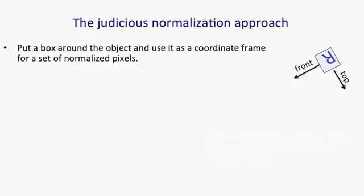A second approach is what I call judicious normalization. If you look at that upside-down capital letter R on the right, I've put a box around it, not very well in fact, and I've labelled a top and a front for that box. Relative to that box, the R has, for example, a vertical stroke at the back and a loop facing forwards at the top. If we describe features of the R relative to that box, they're going to be invariant, assuming it's a rigid shape.